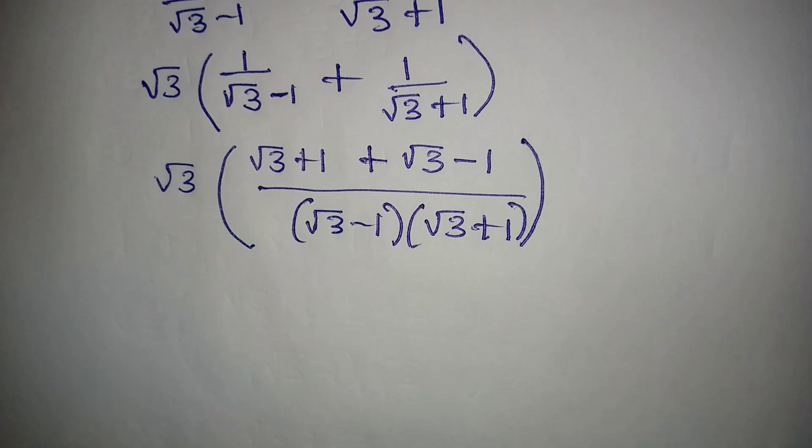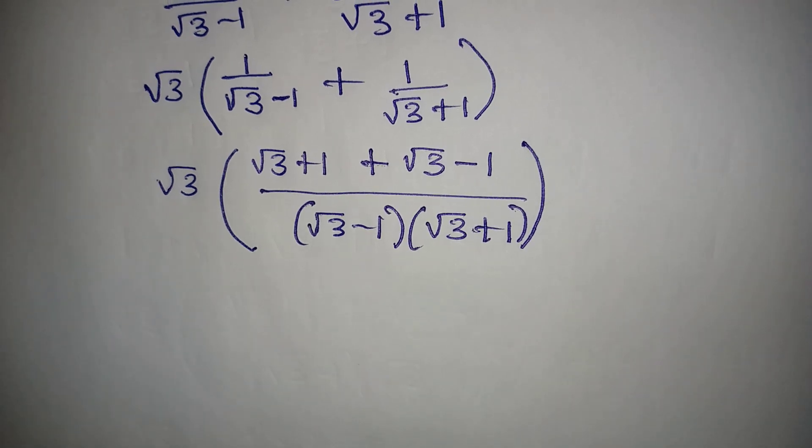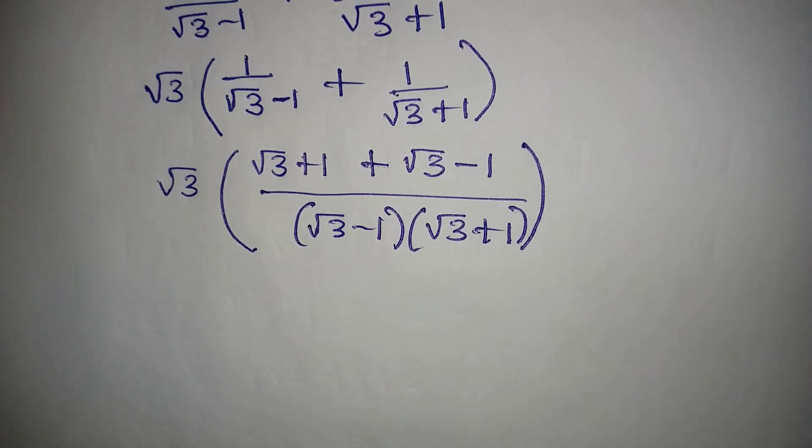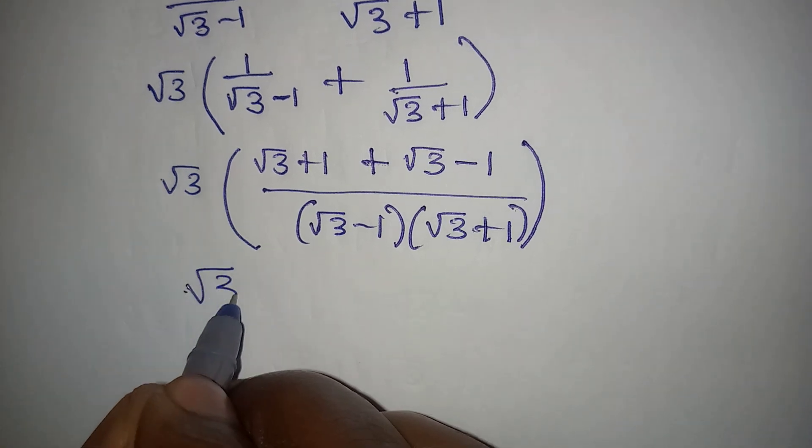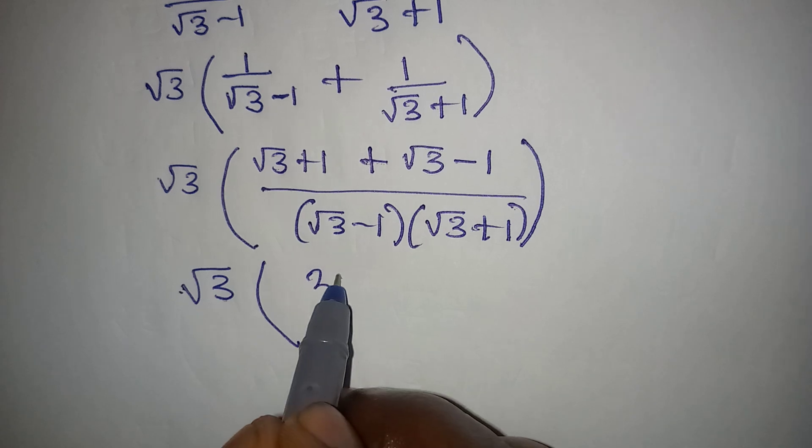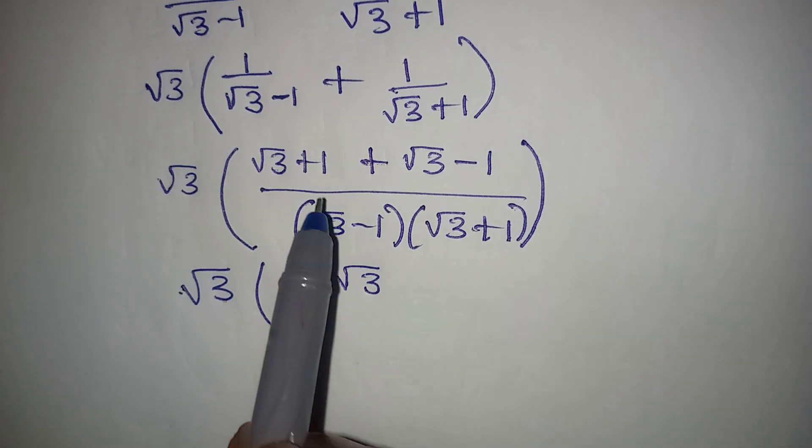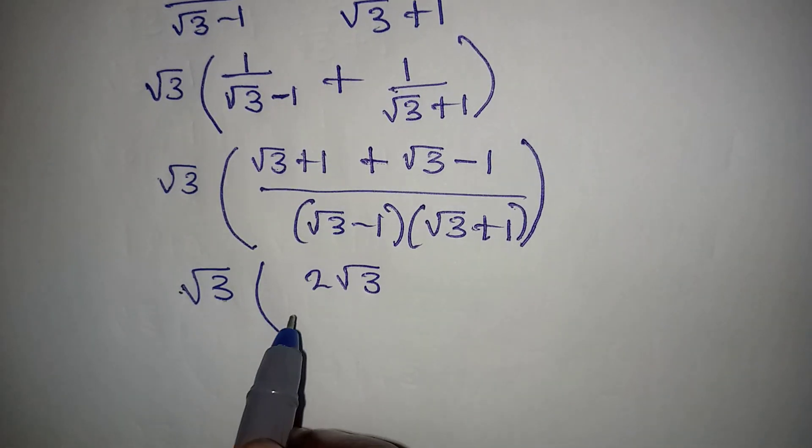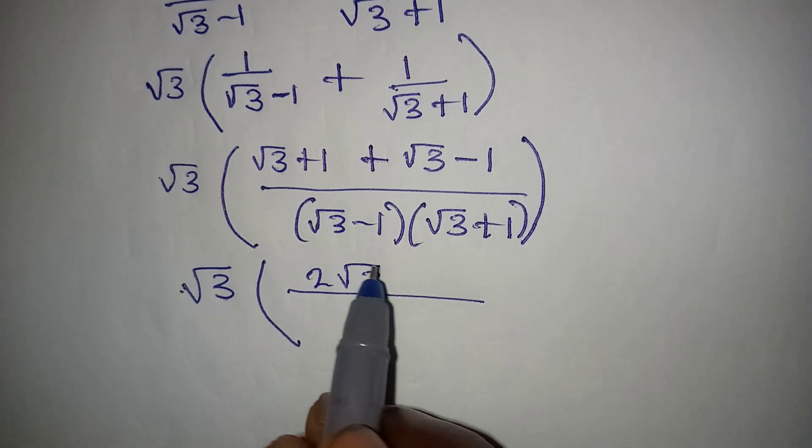Now see what I'm going to do next. We have root 3 outside, then this plus this will give us 2 root 3. Then 1 minus 1 is gone, so the whole of this will be over this.